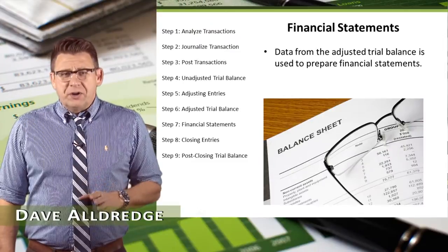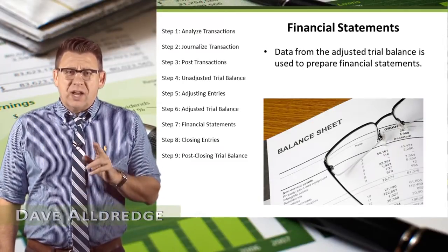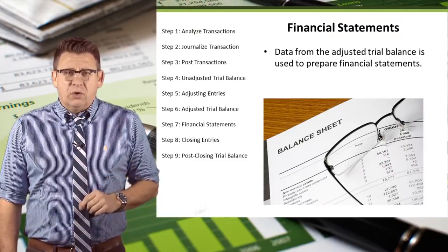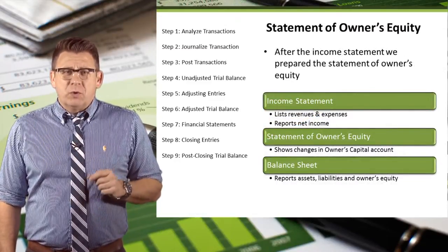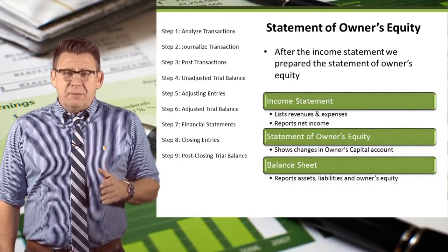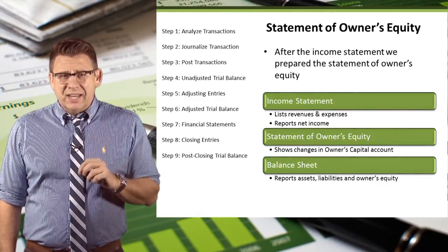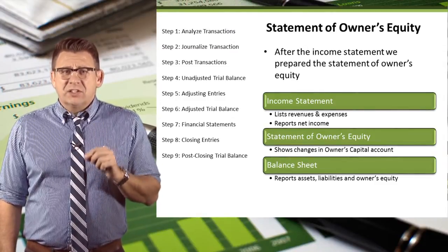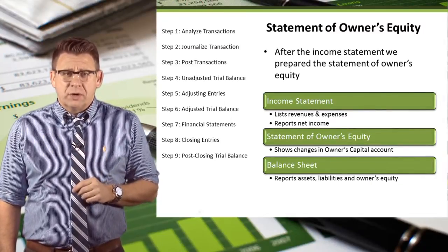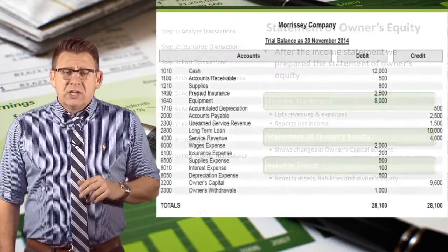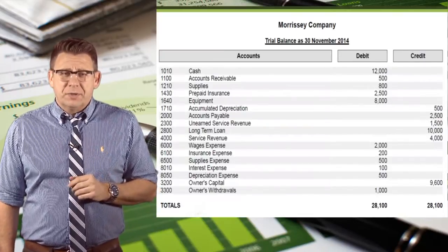The financial statements are prepared directly from the adjusted trial balance. The focus of this short video is the statement of owner's equity. After the income statement, we prepare the statement of owner's equity. This follows the income statement because net income is also included on this statement, as net income increases owner's equity. So let's use the adjusted trial balance to complete the financial statements.